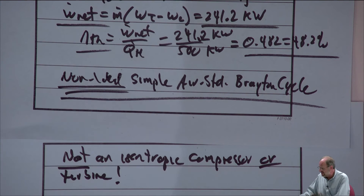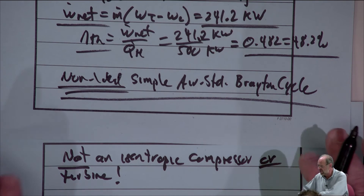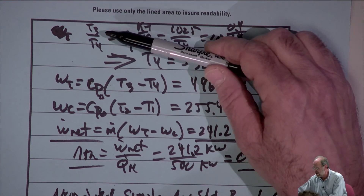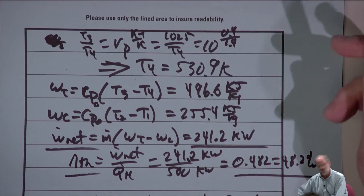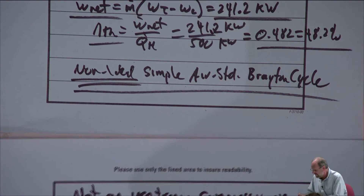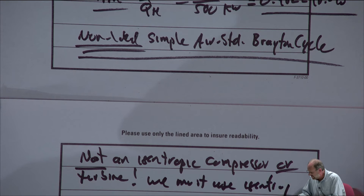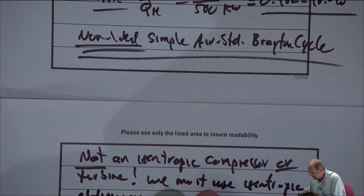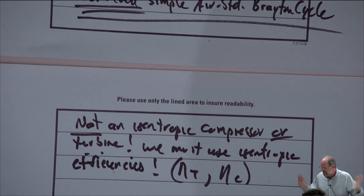We know how to handle this — when you have a non-ideal steady flow device like a turbine or compressor, we use the isentropic efficiency. This adds just one short step to the process. What we're really finding with the isentropic calculation is T4S, and the only way to get from T4S to the actual T4 is to use the isentropic efficiency. This is what we covered at the end of chapter 7. So we must use the isentropic efficiencies η_T and η_C.